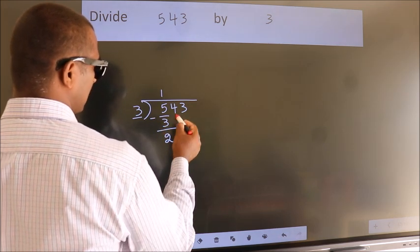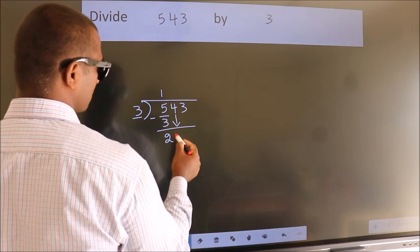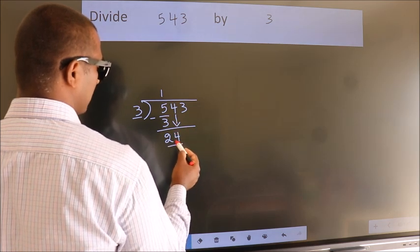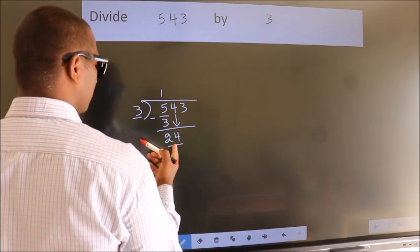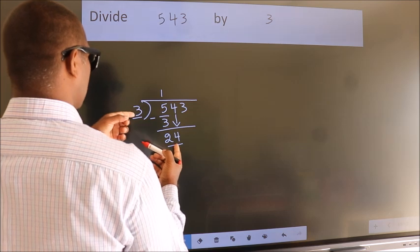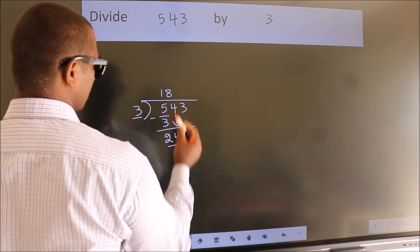After this, bring down the beside number. So, 4 down. So, 24. When do we get 24? In 3 table, 3 8s 24.